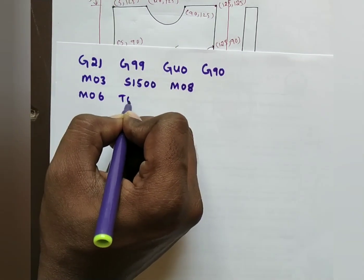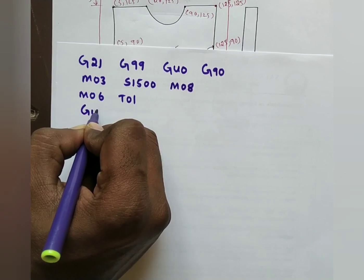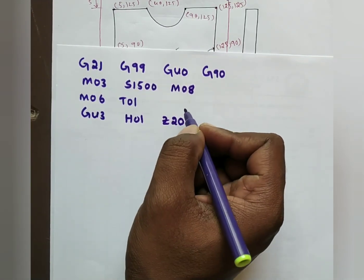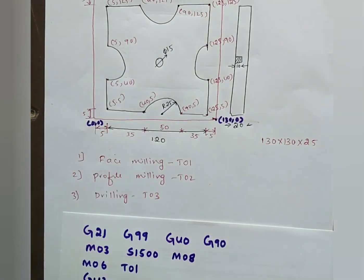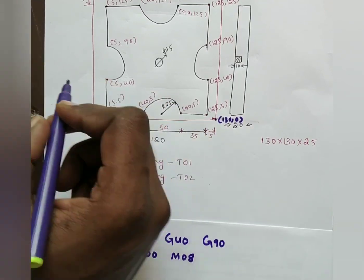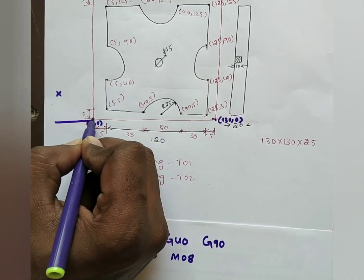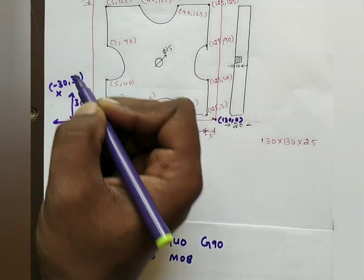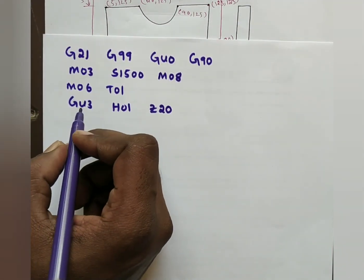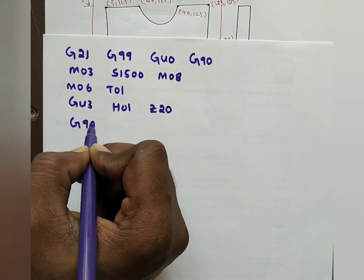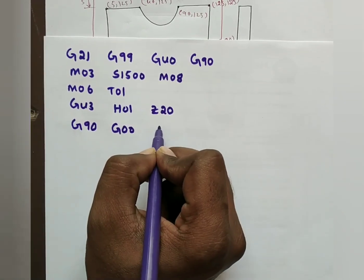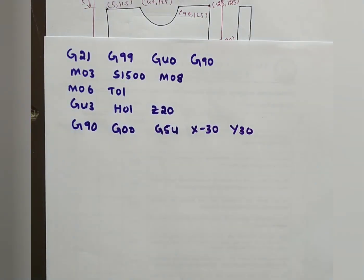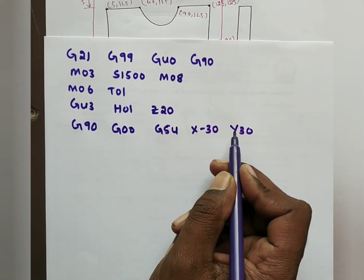First operation is face milling. Select tool: M06 T01. Define tool length: G43 H01 Z20 — tool length assumed as 20 mm. Choose the reference point in the second quadrant at X minus 30, Y 30. The code is: G90 G00 G54 X-30 Y30.